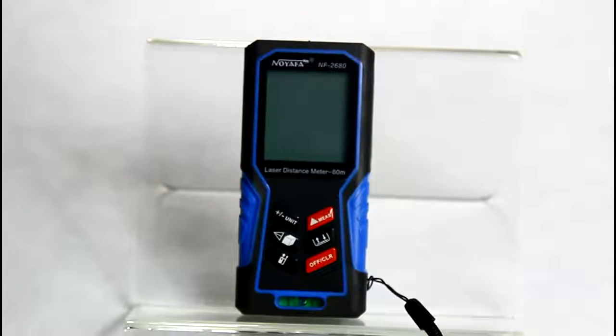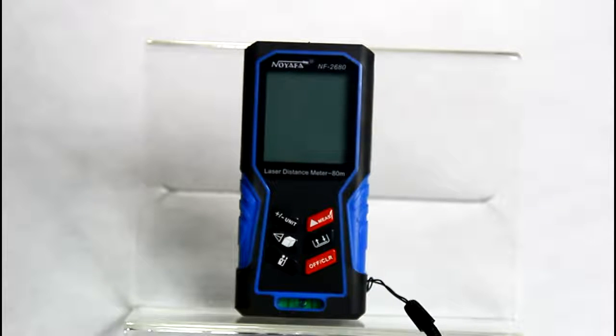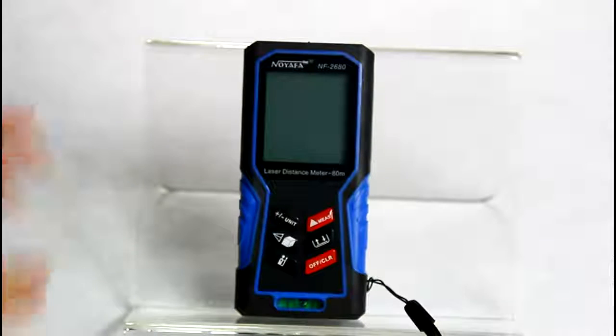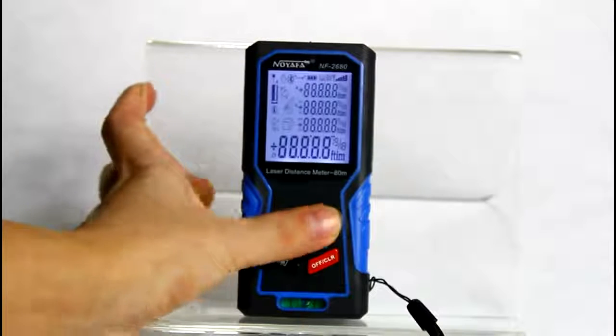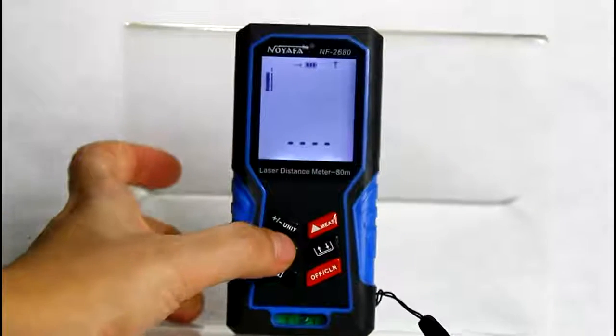Here, I'd like to show a special function, lofting measurement. This function is mainly used to measure distance with equal space. Now, press this button for 2 seconds to come to lofting mode.